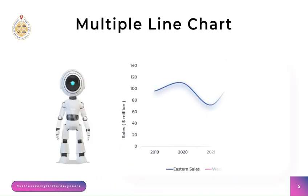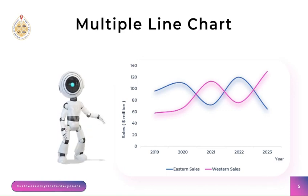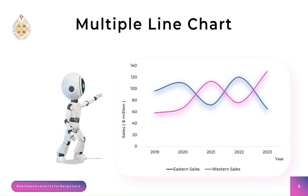The last chart is a multiple line chart, which is a graphical representation that displays multiple lines on the same graph. Each line represents a different data series and has different colors or patterns to distinguish between the lines. It is used to show and compare trends or patterns over time or across different categories.